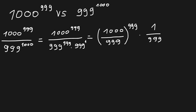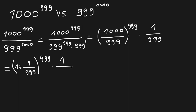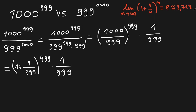Now 1000 divided by 999 can be written as 1 plus 1 divided by 999, all to the power of 999, and then times 1 divided by 999. Now I'm going to use the formula: the limit as n tends to infinity of 1 plus 1 divided by n, all to the power of n, equals e, which is approximately 2.718. So this value is smaller than e.